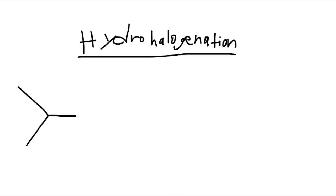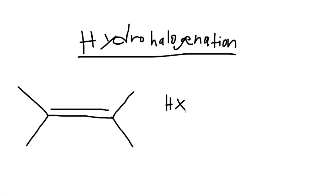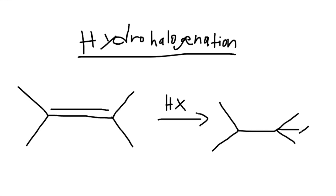For example, we have this structure right here, and this structure is combined — added — with a hydrogen and a halogen element. The X stands for chlorine, bromine, or iodine. If this structure is added with the hydrogen and halogen element, it will give a result with X going here as the halogen element, and the hydrogen coming off over here. This is called an addition reaction.